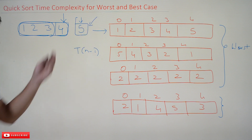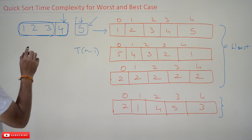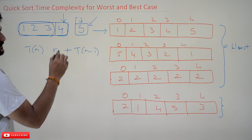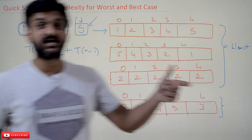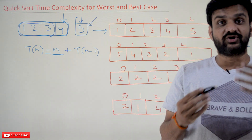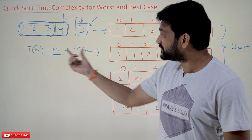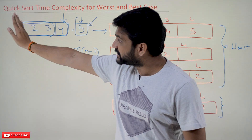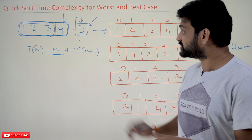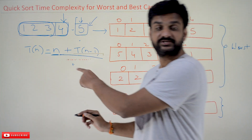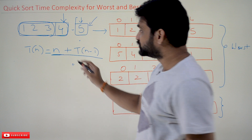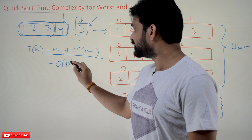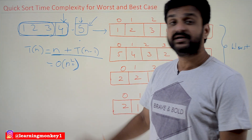The behavior is: every time one element is placed in its correct position and we get T(n−1) for the rest. The recurrence relation is T(n) = T(n−1) + n, where n represents the time taken by the partition algorithm to iterate. We have already solved this using the substitution method in our previous videos, and the result is O(n²).